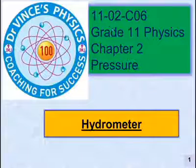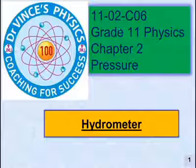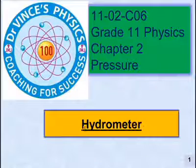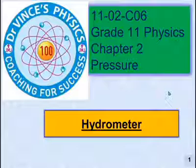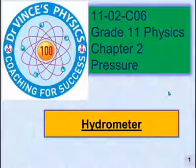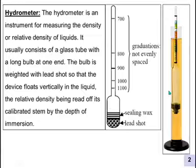Grade 11 Physics, Chapter 2. A hydrometer is an instrument for measuring the density or relative density of liquids.